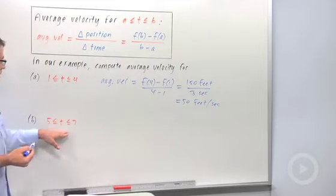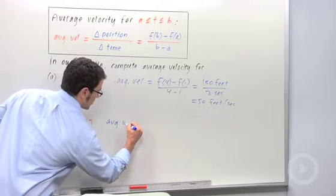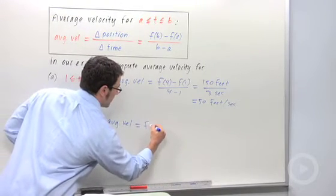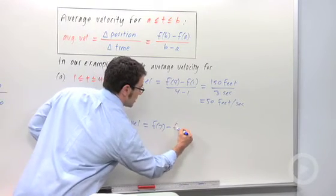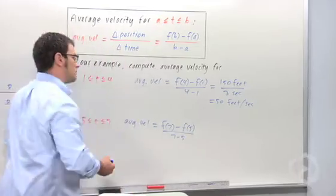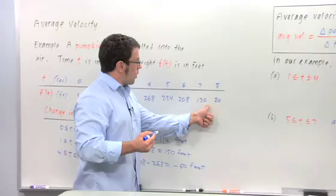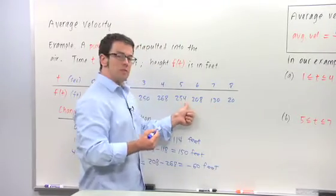Okay, and then how about on the interval from 5 to 7? Average velocity is f of 7. Remember, final position minus initial, minus f of 5 over 7 minus 5. f of 7, going back to the table, is 130. f of 5, 254.